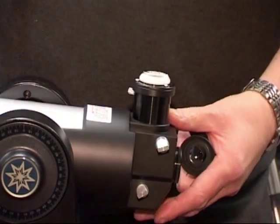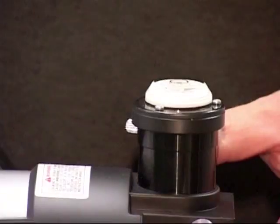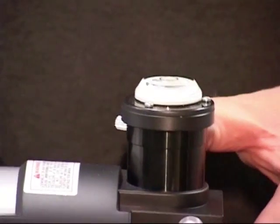Simply pop the AlignMate into the eyepiece holder of the Meade telescope and use the bubble level to quickly and accurately level the tube.